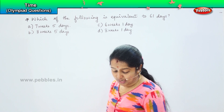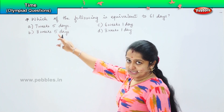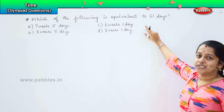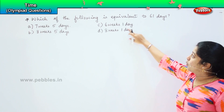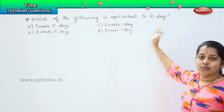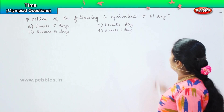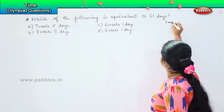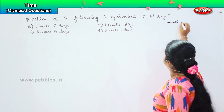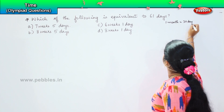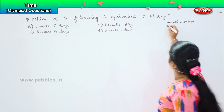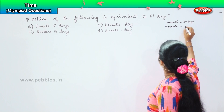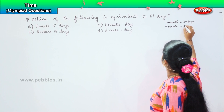Since the answers are given in weeks, we need to convert the 61 days into weeks and then find the answer. We know that one month is equal to 30 days, and four weeks is equal to one month.